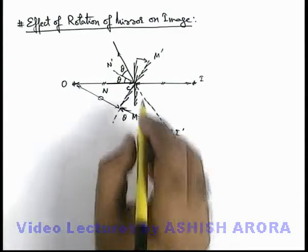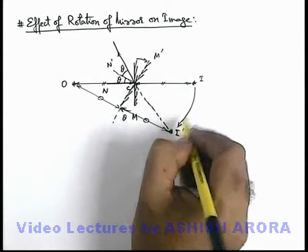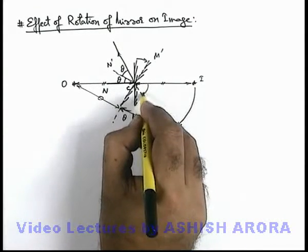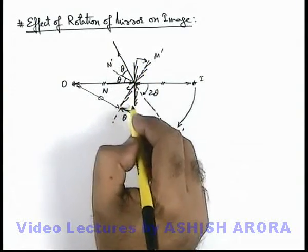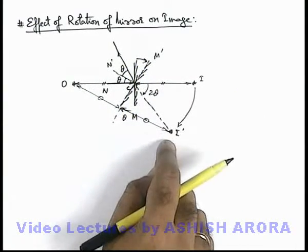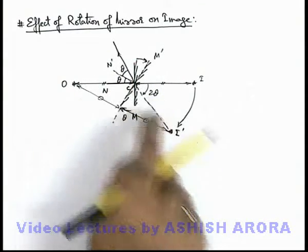So we can see the image will rotate from the initial position by an angle 2 theta. If the mirror rotates by an angle theta, the image rotates in the same direction but with twice the angle.